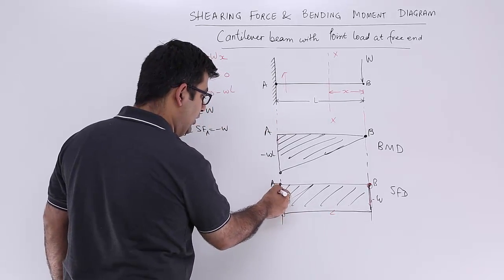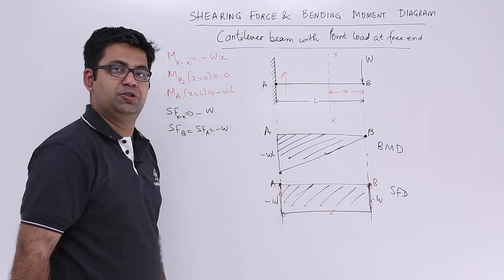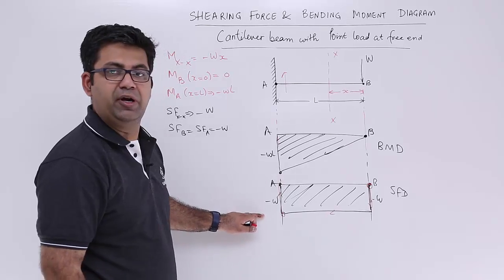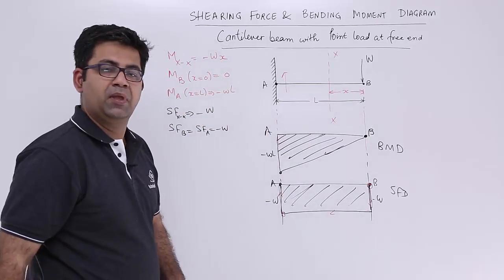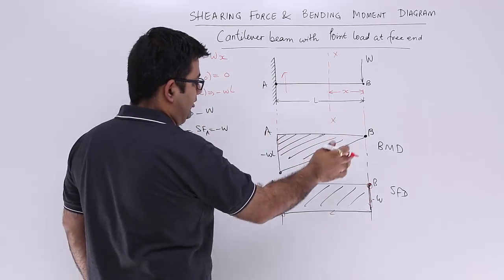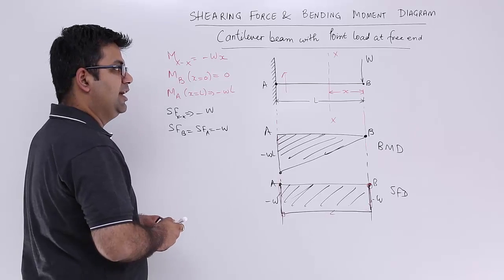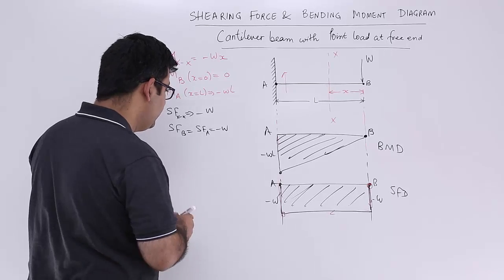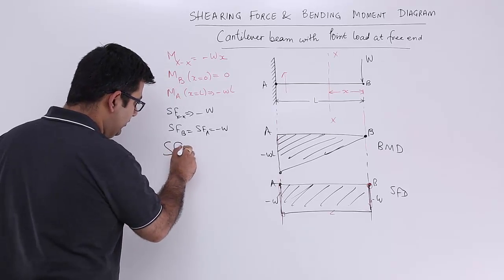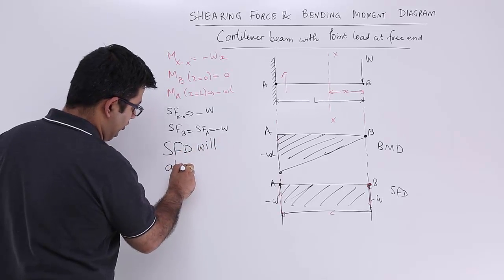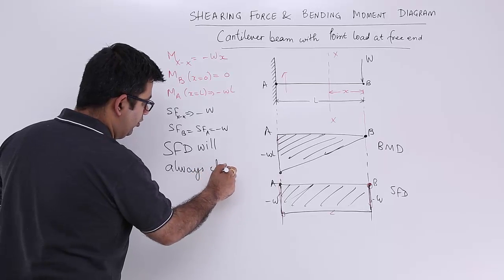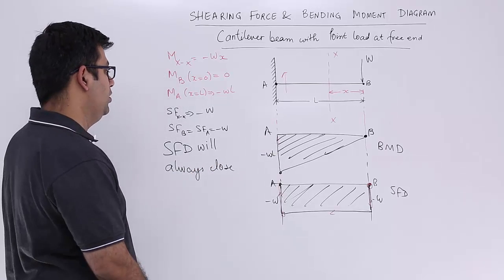At point a, you will go and close this because you will have an upward net resultant on the left hand side to balance out the w on the right hand side. So this is always the case in the case of an sfd, that is sfd will always close. If it is not closing, then you are going wrong somewhere.